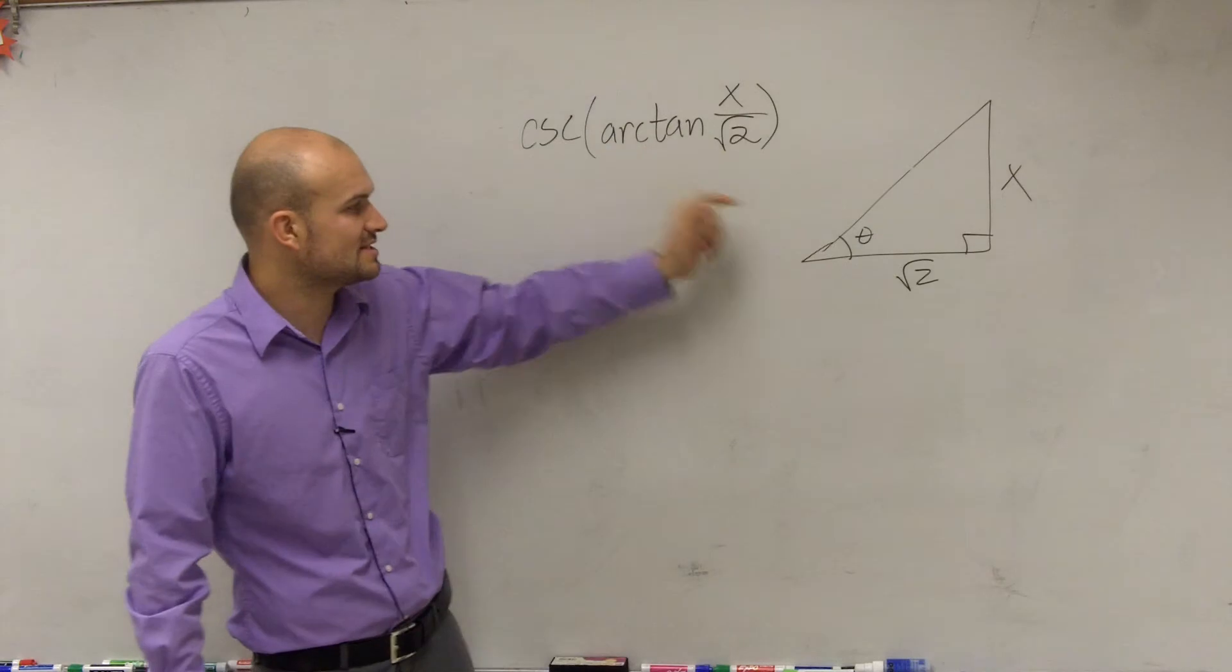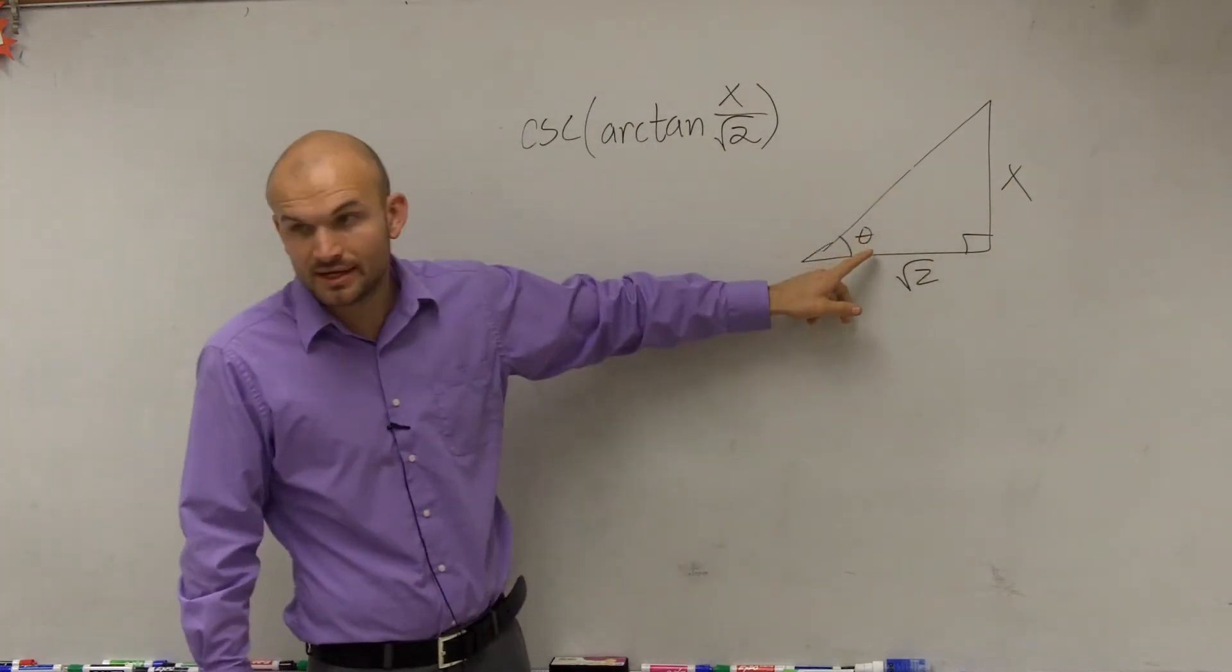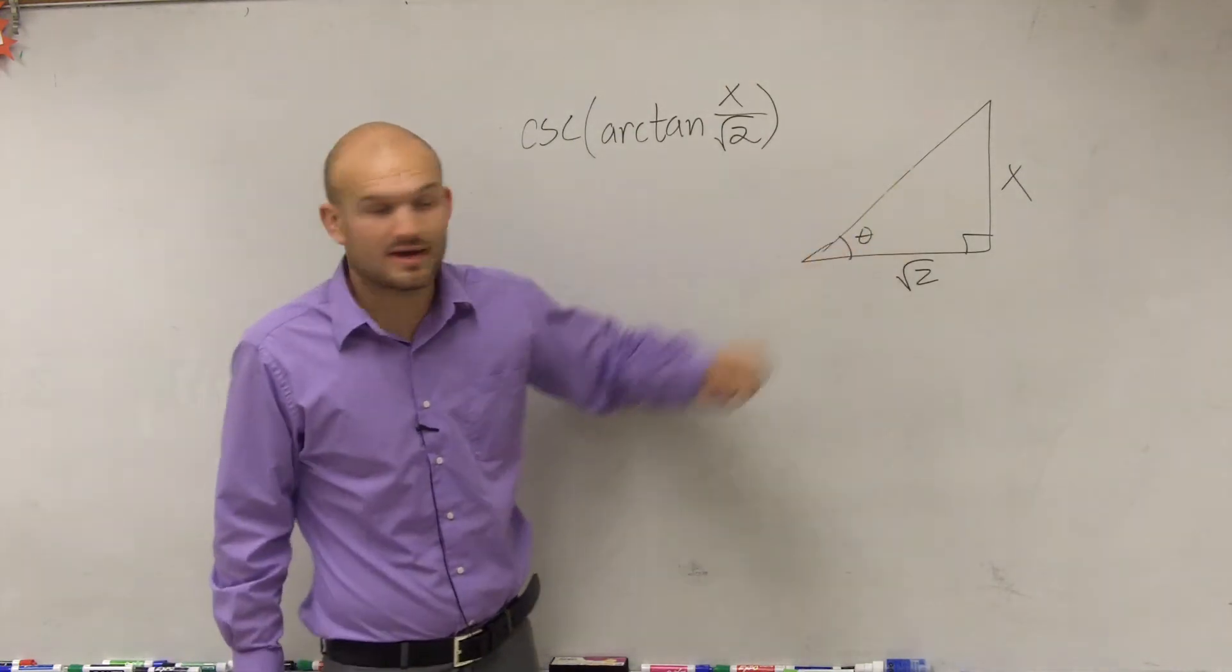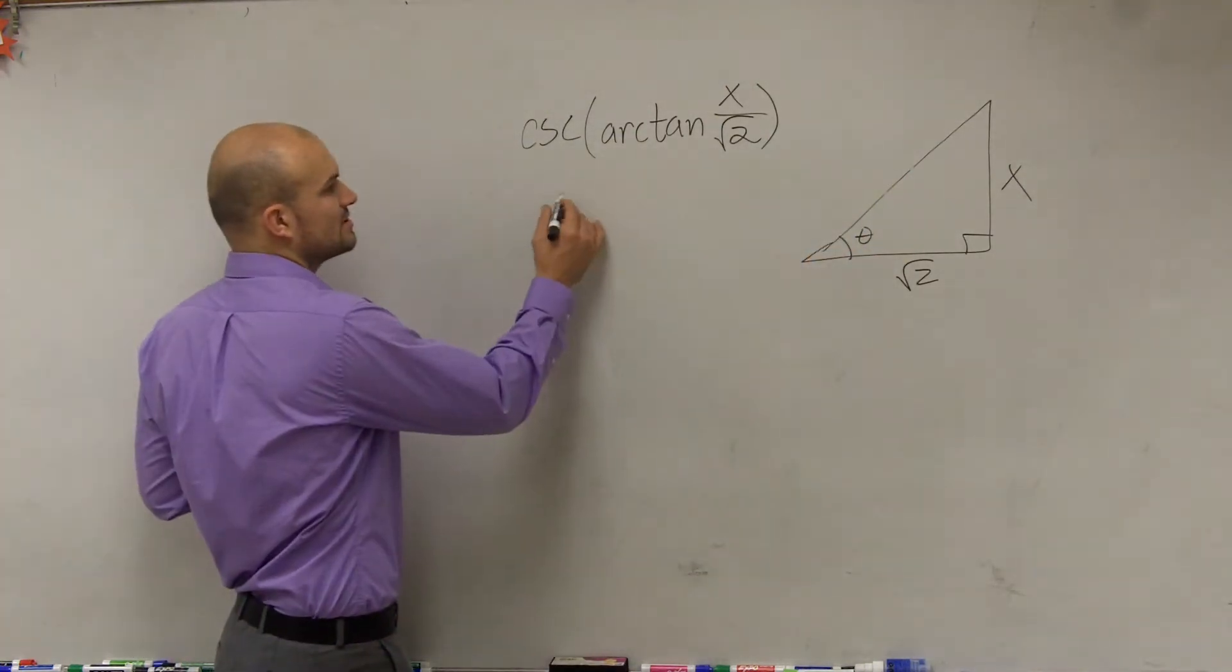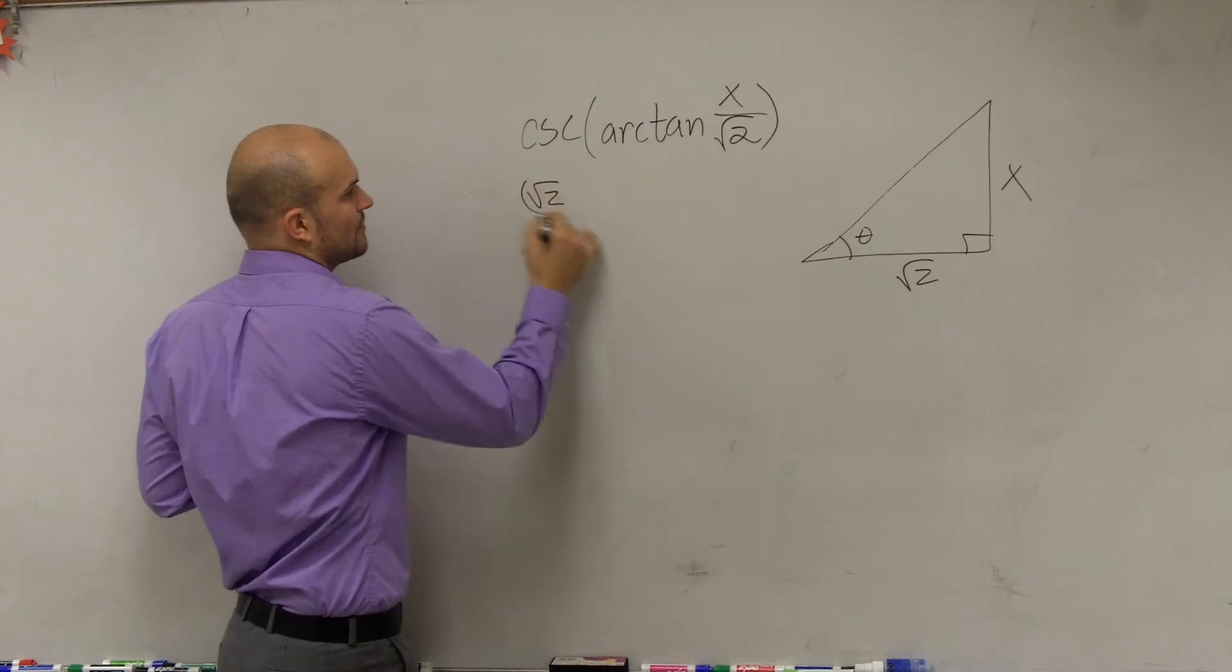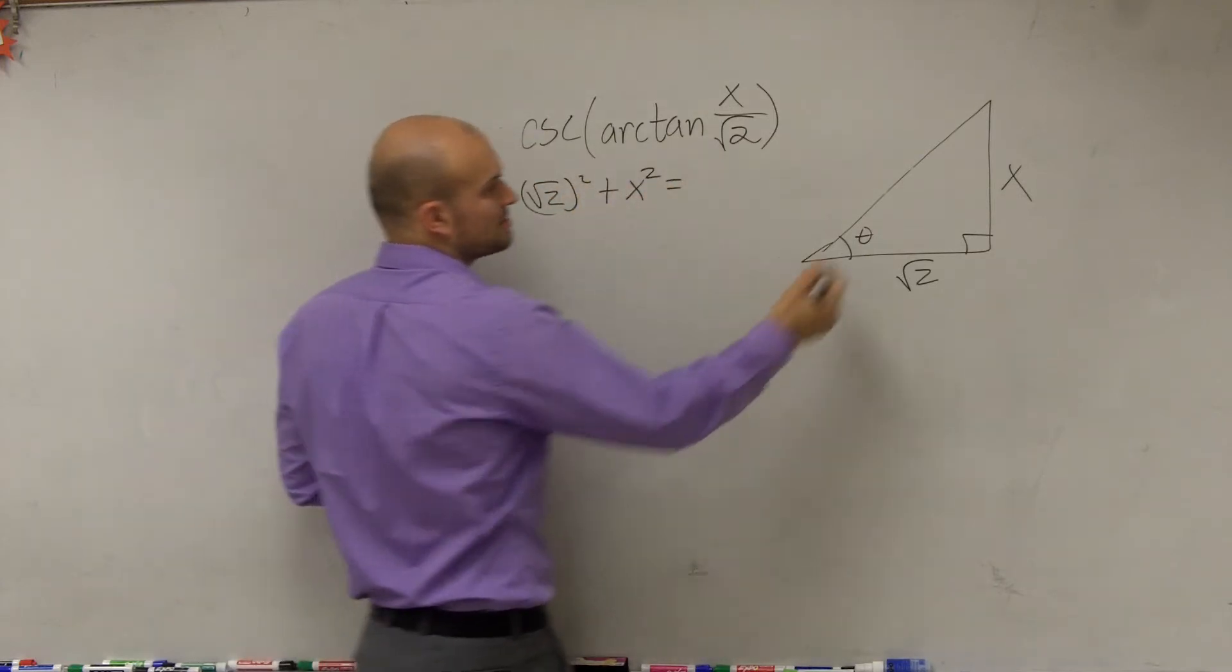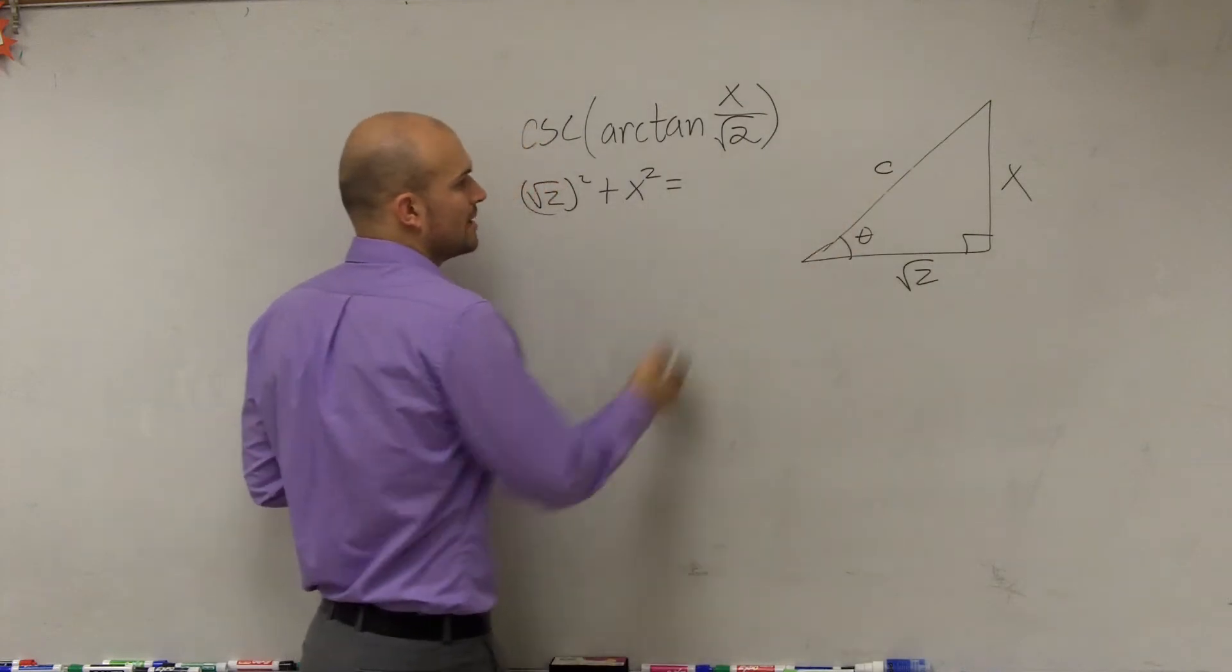So when I take the inverse tangent, I'm going to get a theta here. But if I want to find the cosecant of that theta, what I'm going to have to do is now find the hypotenuse. So simply what I'll do is say your leg squared plus your leg squared equals our hypotenuse squared.